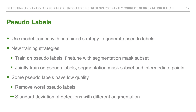With this trained model we try to use pseudo labels. In the first step we generate pseudo labels with the model trained using the combined strategy. With these pseudo labels we have two new training strategies: first, train on the pseudo labels and then fine-tune with the segmentation masks subset; second, train jointly on the pseudo labels, the segmentation masks subset, and the intermediate points. As we find these do not work very well, we investigated the quality of the pseudo labels. To remove the worst pseudo labels, we measure the standard deviation of detections when the same image is fed with different augmentations, as a quality metric.